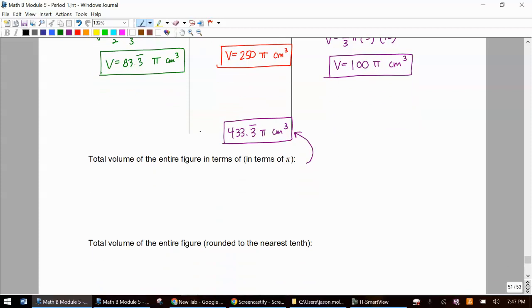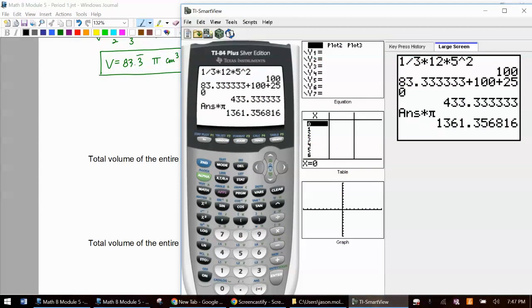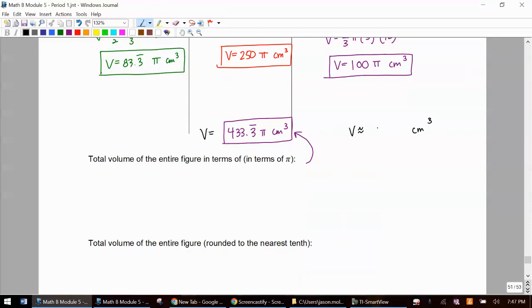And then we're going to round it. So we'll even label this. So this will be our volume and our final answer rounded the nearest tenth is we'll just press times π. So we got 1,361 point and we have 4, 1361.4.